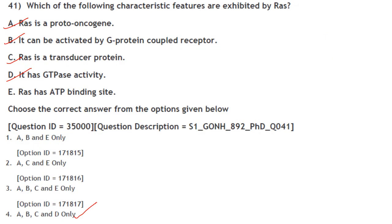Which characteristic features are exhibited by RAS? RAS is a proto-oncogene, it is activated by G-protein-coupled receptors, it is a transducer protein, and it has GTPase activity. However, RAS does not have an ATP binding site — it is a GTP binding protein. So A, B, C, D are correct and E is not. Answer is option 4.